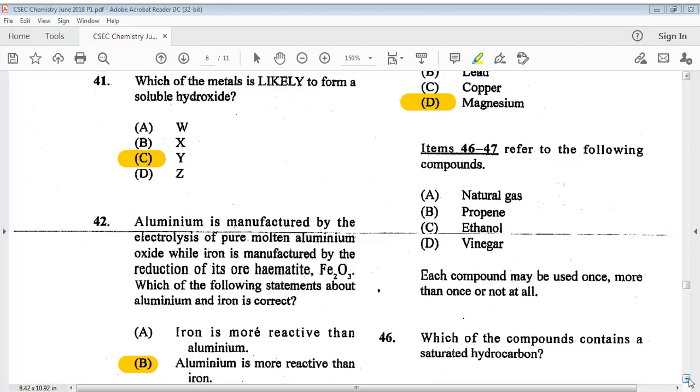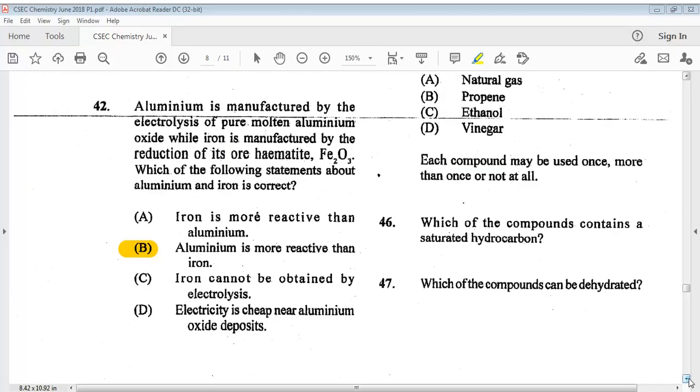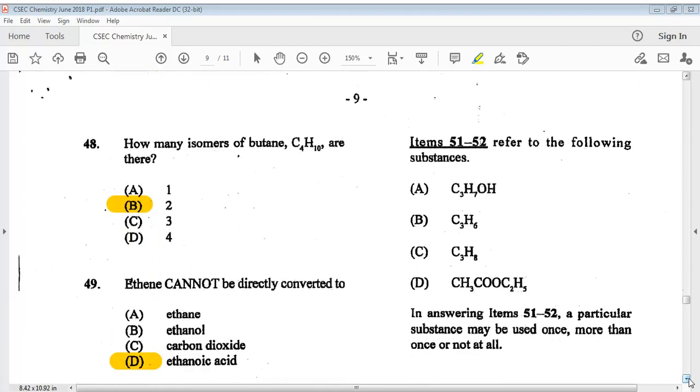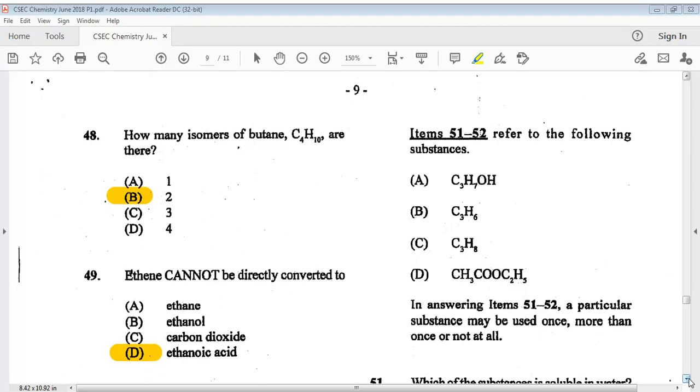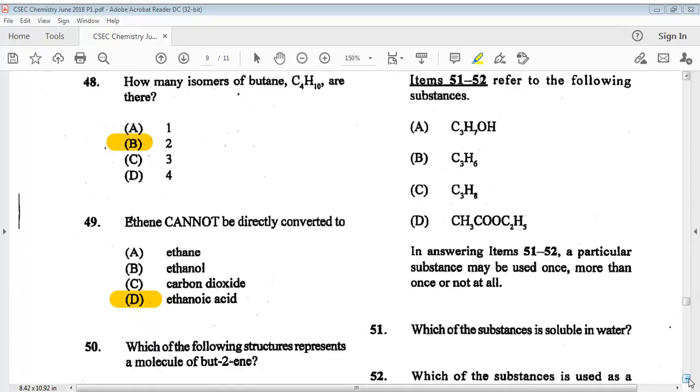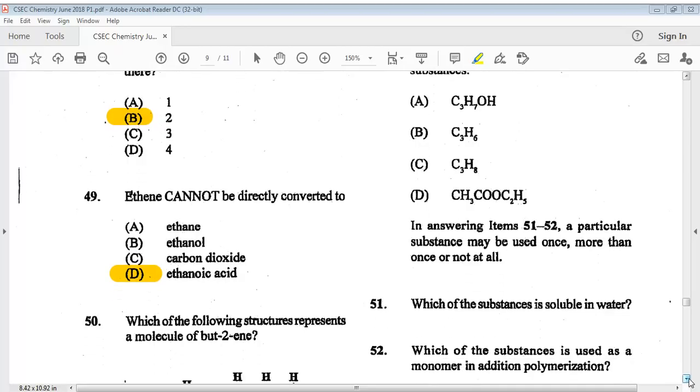Items forty-six and forty-seven refer to the following compounds: A natural gas, B propane, C ethanol, D vinegar. Each compound may be used once, more than once, or not at all. Question forty-six: which of the compounds contains a saturated hydrocarbon? The answer is A, natural gas. Question forty-seven: which of the compounds can be dehydrated? The answer is C, ethanol. Question forty-eight, the answer is B. Question forty-nine: ethene cannot be directly converted to. The answer is D, ethanoic acid.